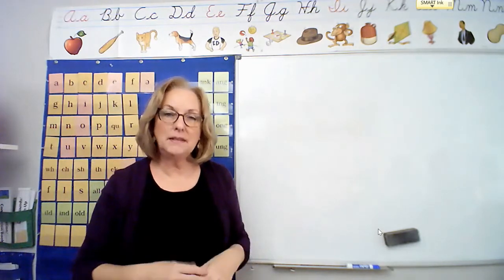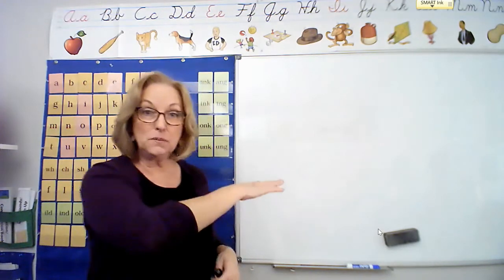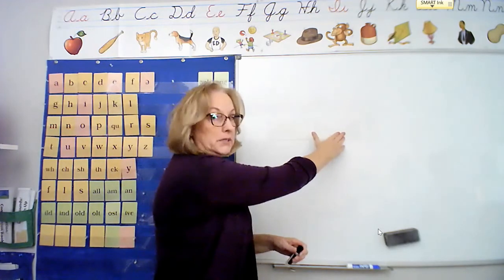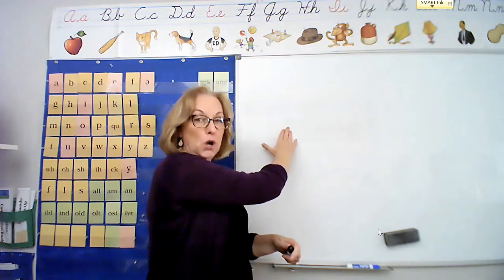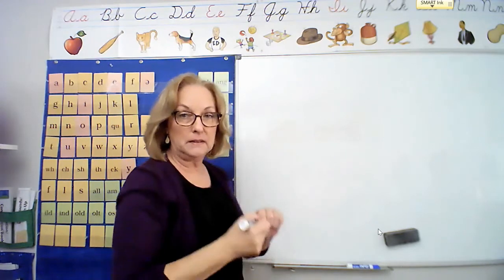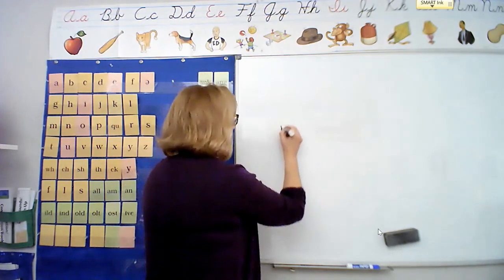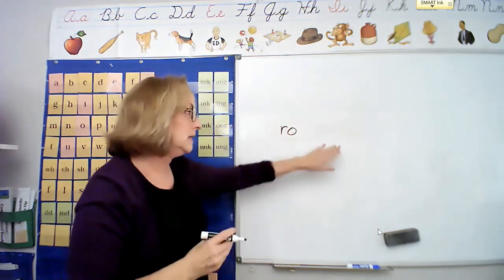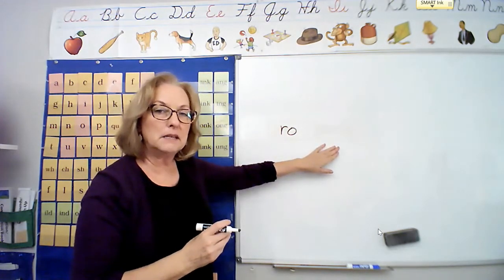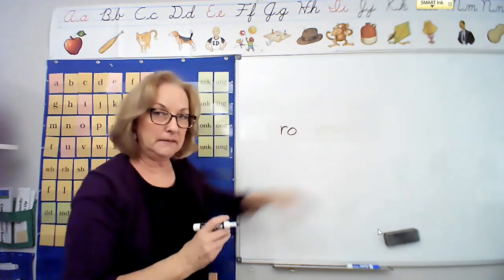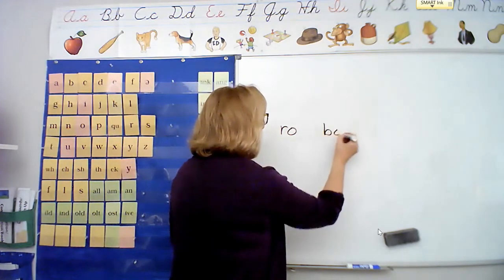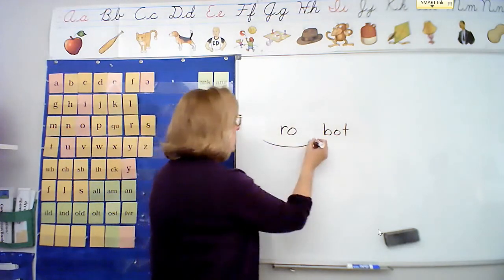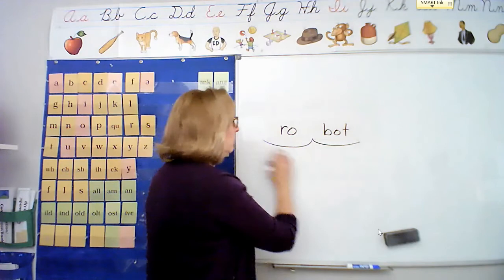Ready? Say robot, robot. Now touch your boxes and say each syllable, ro-bot. Go back to the first syllable, ro. How do you spell it? R-o. Write it in the box. Second syllable, bot. How do you spell that? B-o-t. Scoop it, ro-bot. Read the whole word, robot. Nice job.